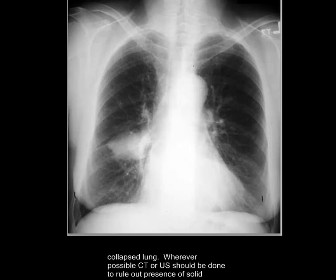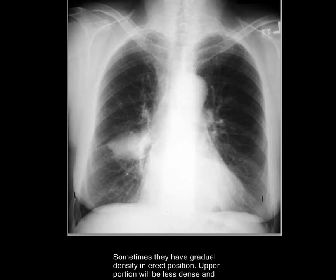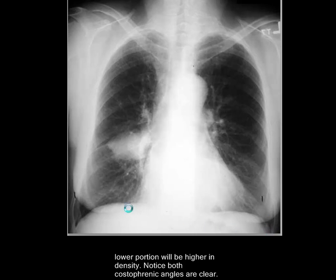Wherever possible, CT or ultrasound should be done to rule out the presence of solid tumors or masses. Fissural interlobular loculations are often seen in cardiac failure. Sometimes they have gradual density in the erect position — the upper portion will be less dense and the lower portion will be higher in density. Notice that both costophrenic angles are clear and do not have any effusion.